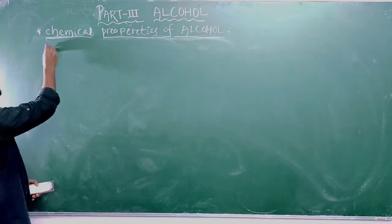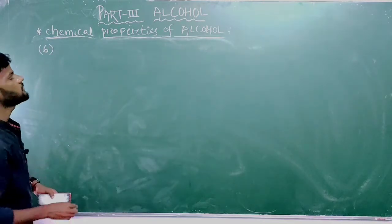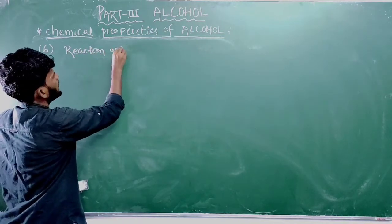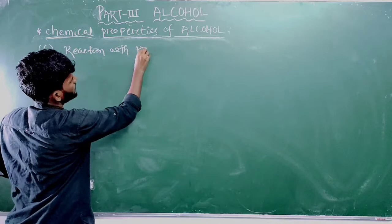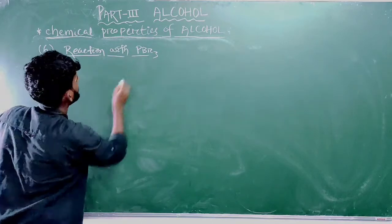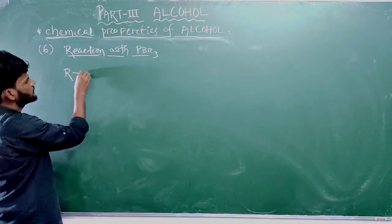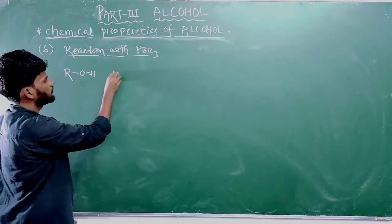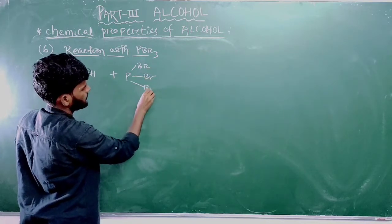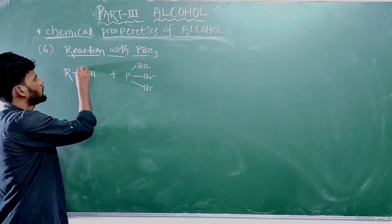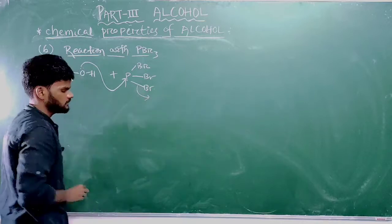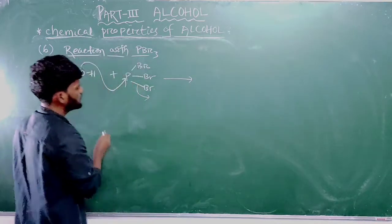Reaction number 6 of the chemical properties of alcohol: reaction with PBr₃. PBr₃ is phosphorus attached to 3 bromine atoms. Let us suppose a general alcohol ROH. The lone pair on oxygen acts as a nucleophile here — it will attack the phosphorus-bromine group. This step is known as a nucleophilic attack.